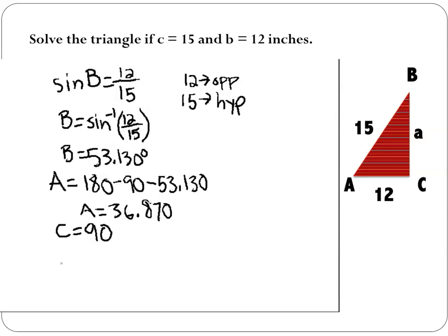Now, we know all of the angles and two of the sides. All that's left is we have to find the last side. I'm going to use cosine, and that's because I know cosine of 53.130, which is angle B, is equal to the adjacent. And the adjacent to angle B is a over the hypotenuse, which is 15, or the diagonal of the right triangle.